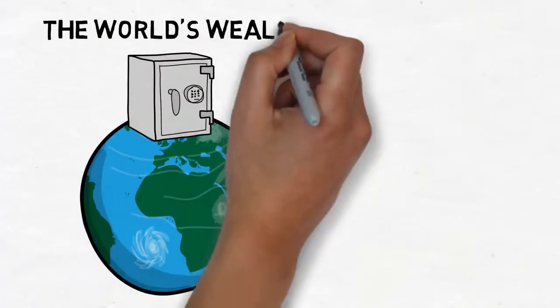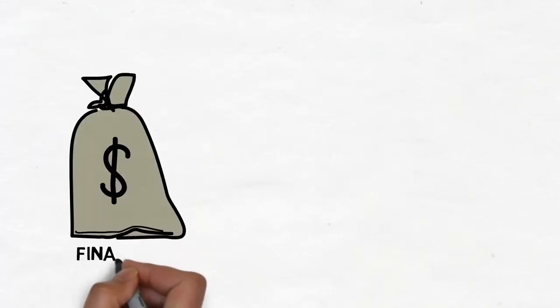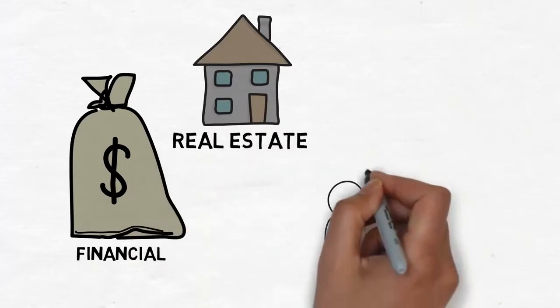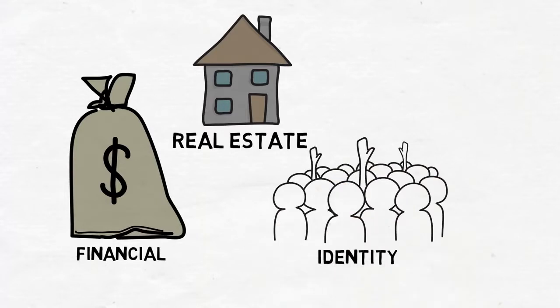All of the world's wealth is stored in electronic records. Financial records secure our money and investment. Real estate records secure our land and homes. Citizenship records secure our taxes, our credit record, our identities.